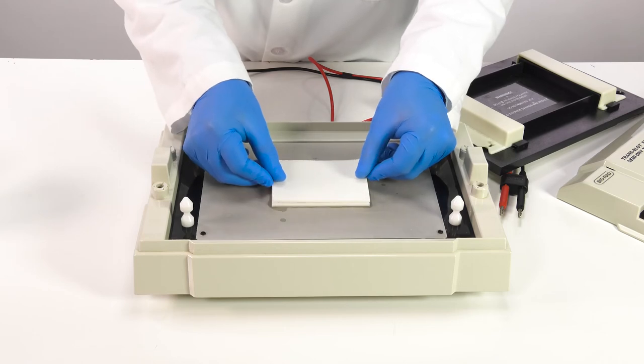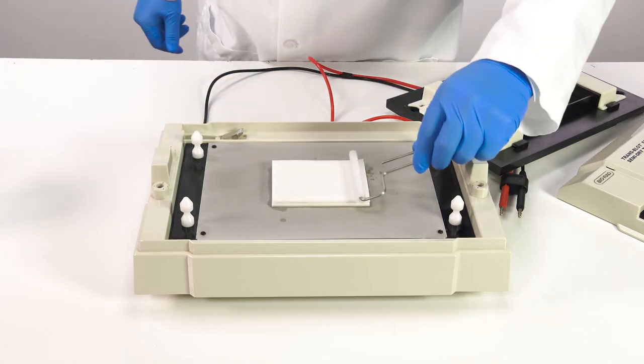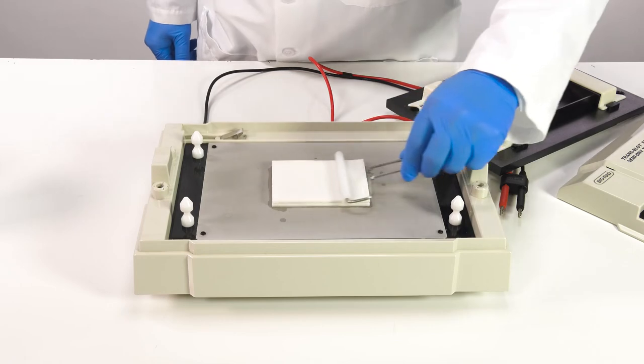Finally, place the other sheet of soaked filter paper on top of the gel. Roll one last time to remove any new air bubbles.